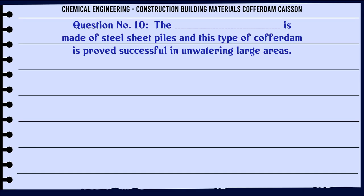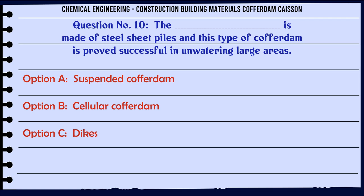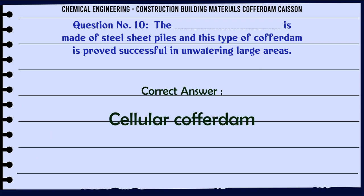Which type of cofferdam is made of steel sheet piles and has proved successful in unwatering large areas? A. Suspended cofferdam. B. Cellular cofferdam. C. Dykes. D. Concrete cofferdam. The correct answer is: Cellular cofferdam.